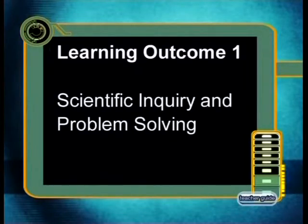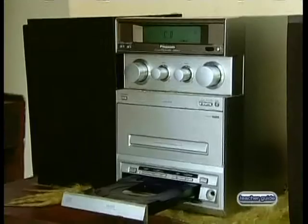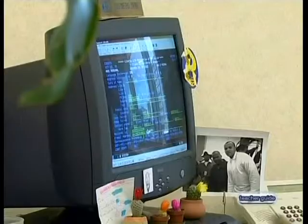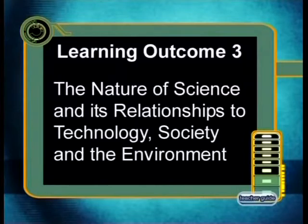In this way, we have addressed the assessment standards related to learning outcomes 1 and 2. We also show how electronic devices are used all around us. This clearly shows how science and technology has impacted society and so will give you opportunities to address some of the assessment standards of Learning Outcome 3. The learning outcome and assessment standards for each lesson are stated at the beginning of each video lesson in the series, and lesson outcomes linked to these are also given for each lesson.